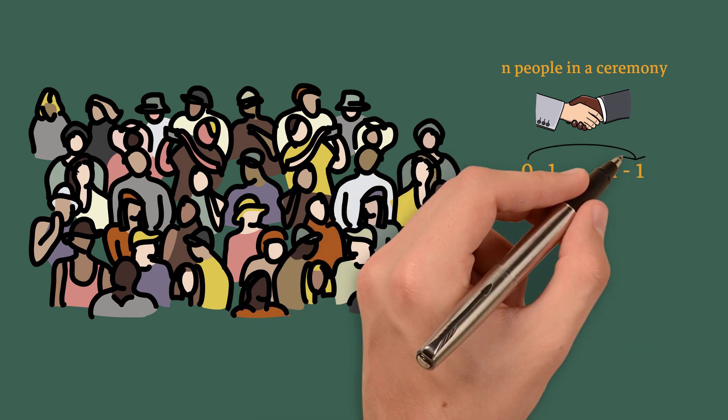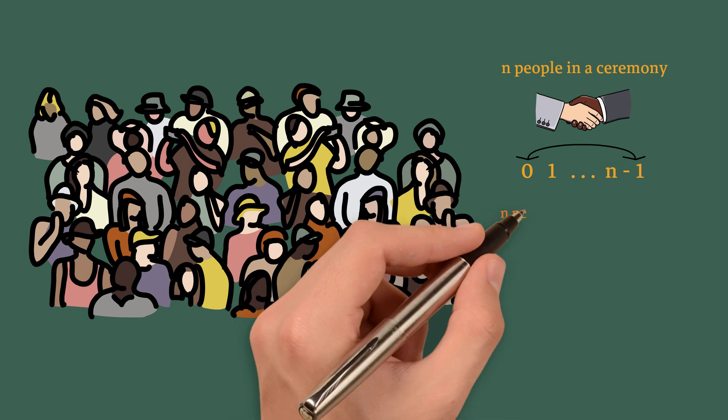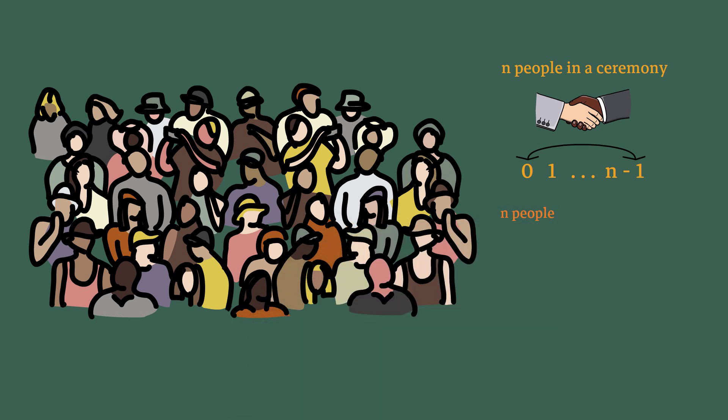Therefore we have n people and at most n-1 different numbers, so we can say that two people have the same number and they have shook hands with equal number of people.